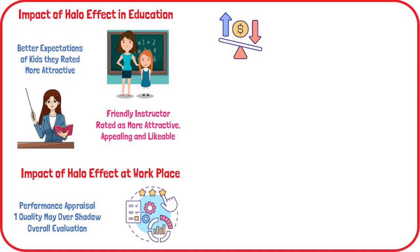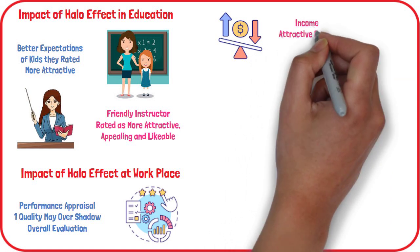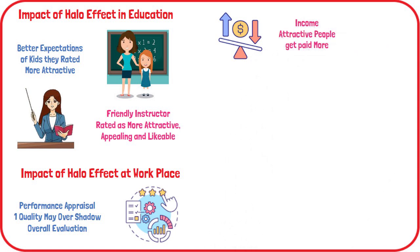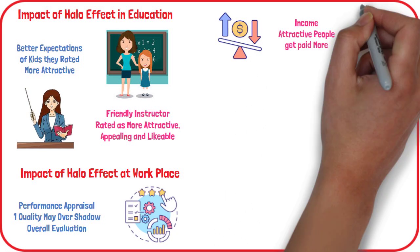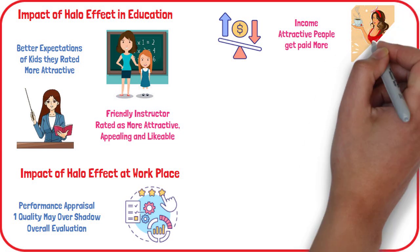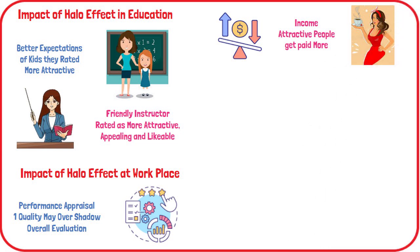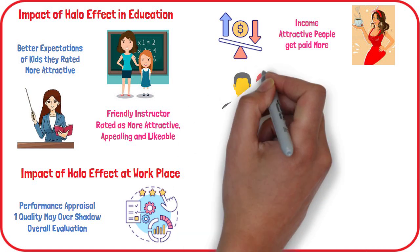The halo effect can also have an impact on income. A study published in the Journal of Economic Psychology found that attractive food servers earned approximately $1,200 more per year in tips than their unattractive counterparts.